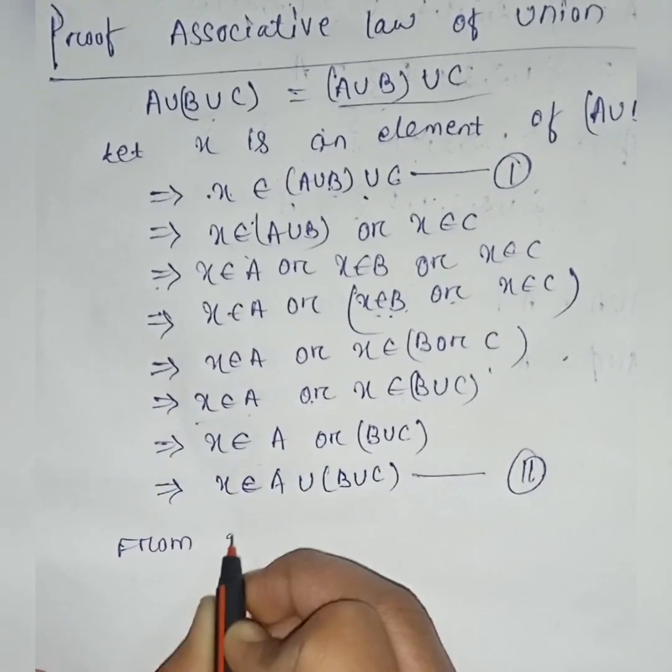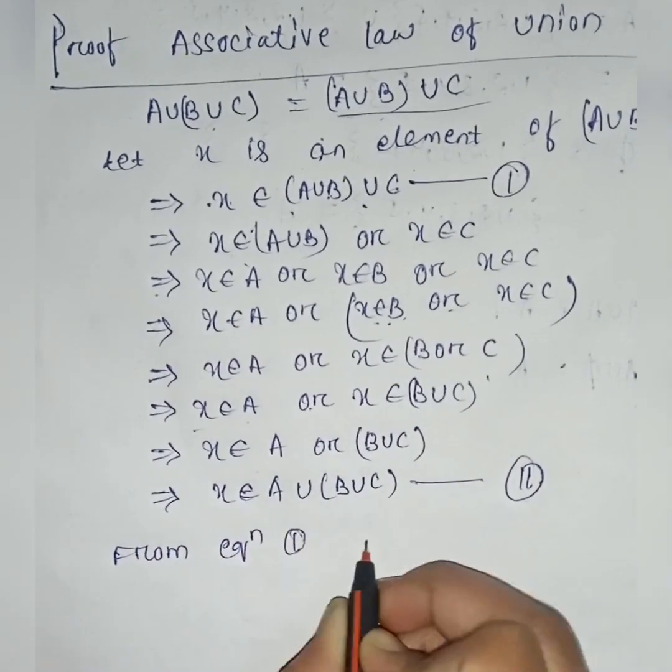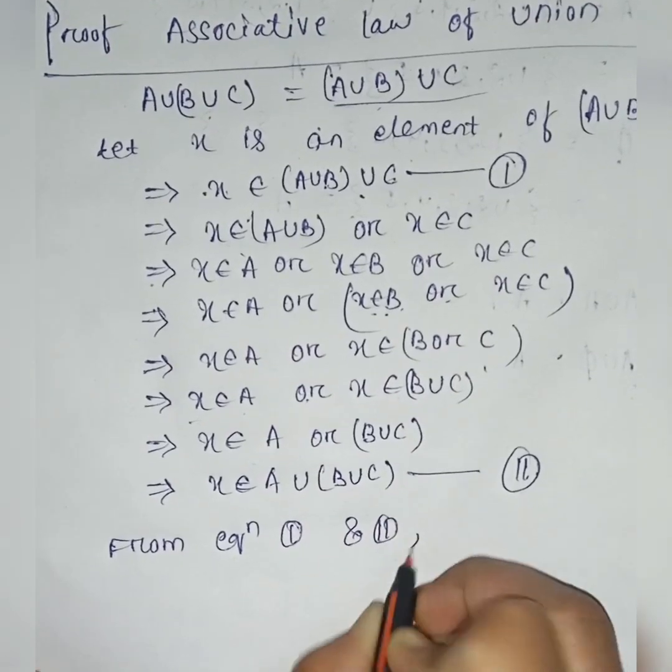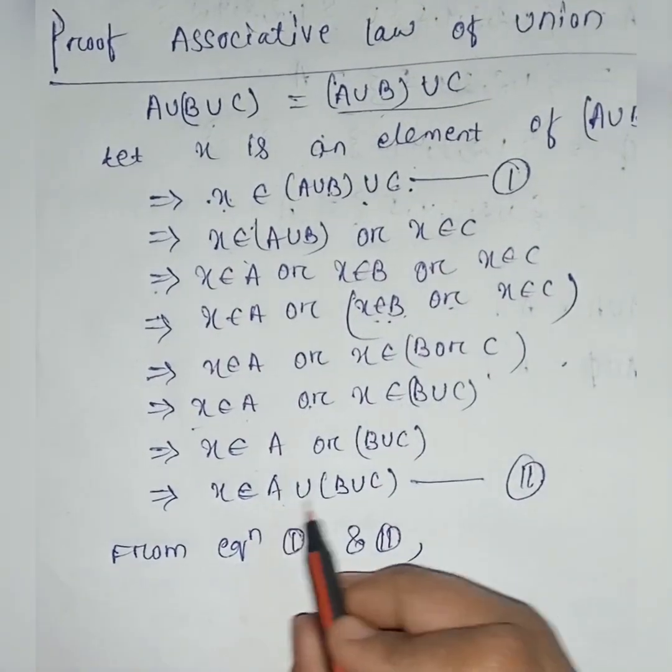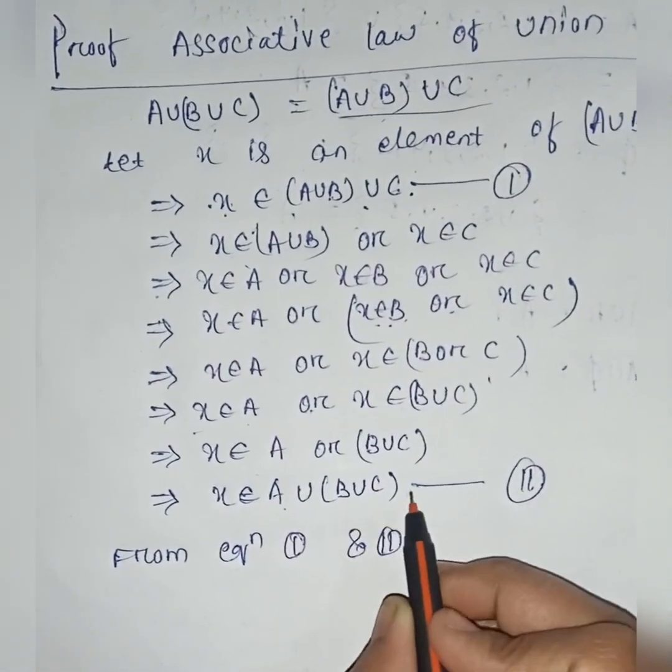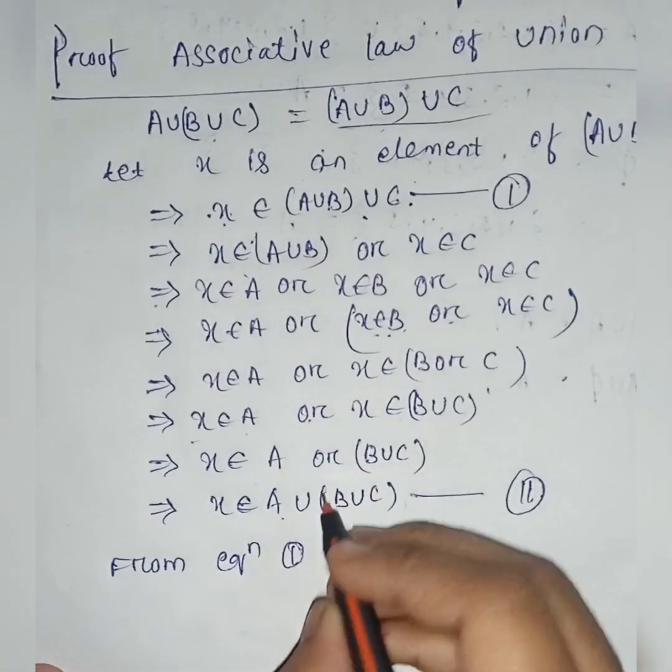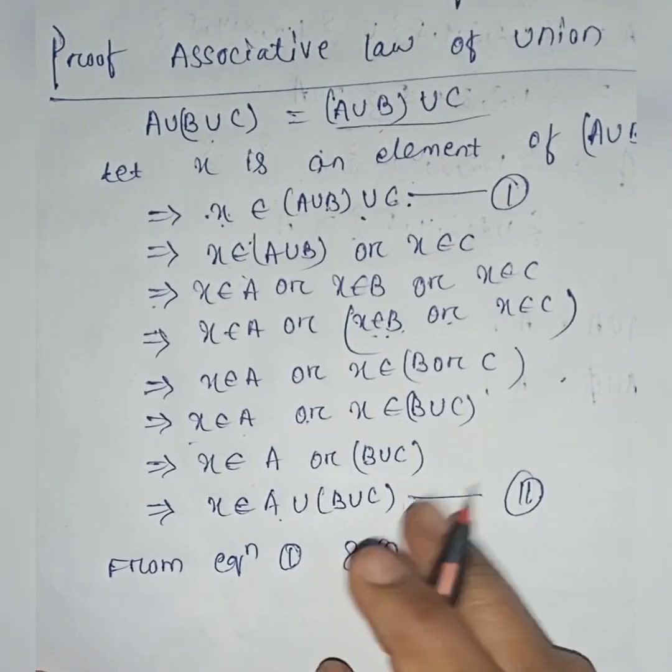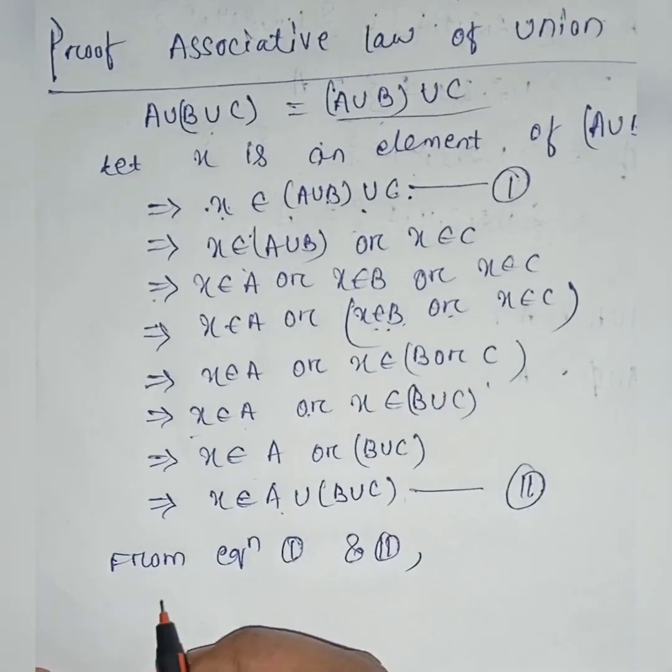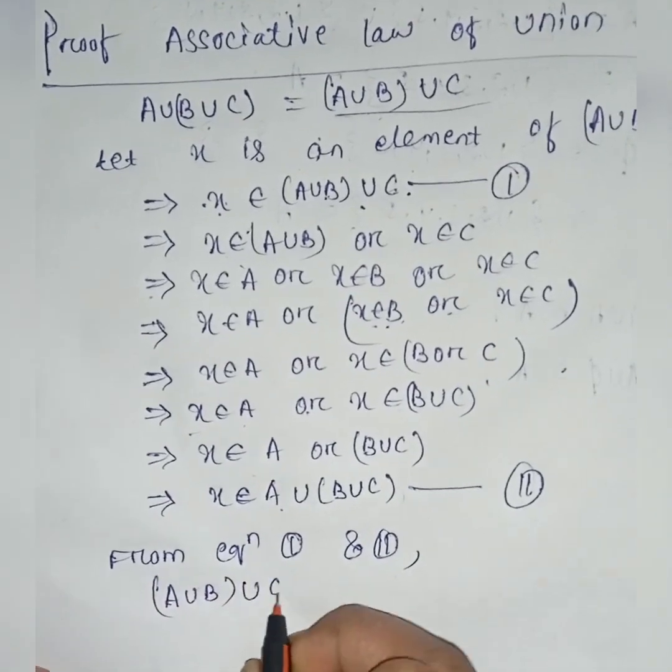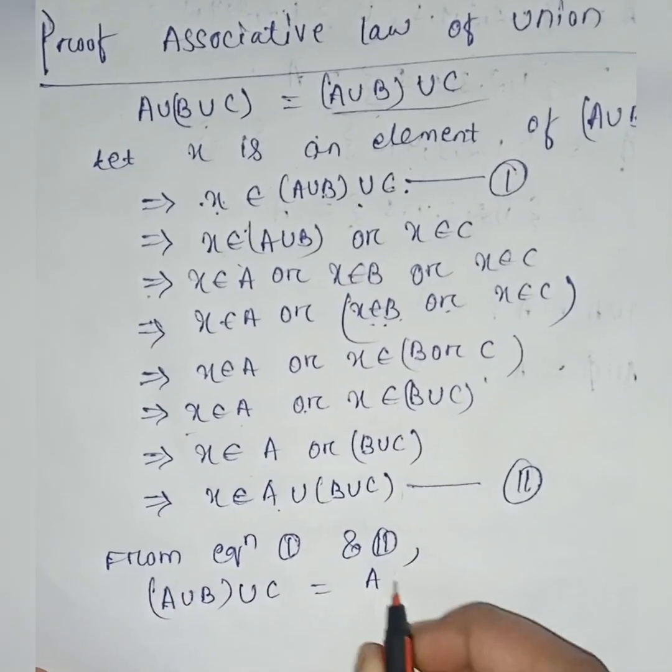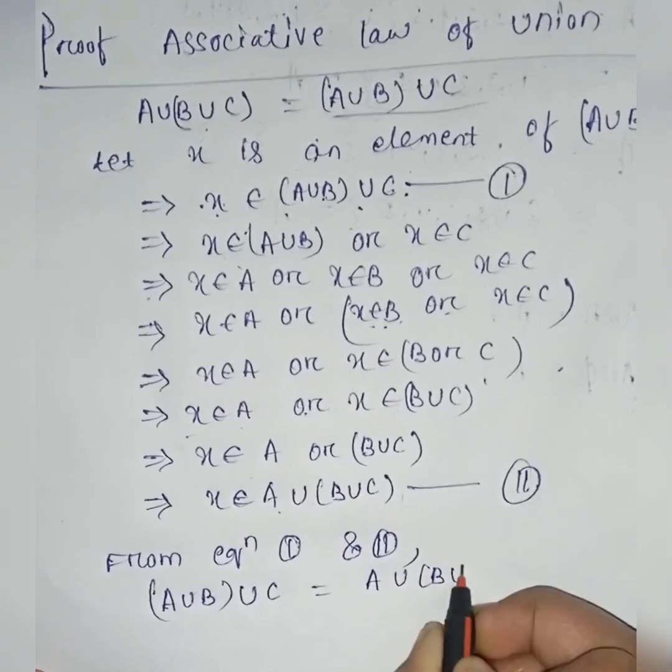From equation 1 and 2, A union B union C has element x, and A union B union C has element x. They are equal sets. A union B union C is equal to A union B union C.